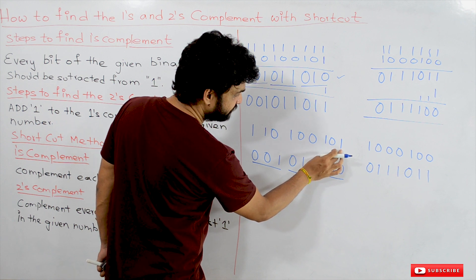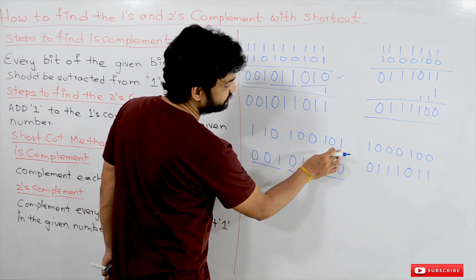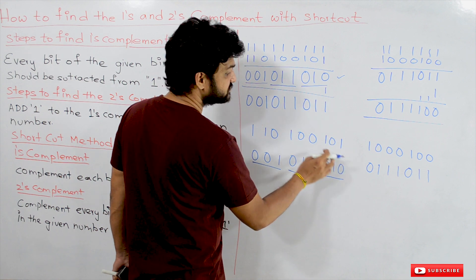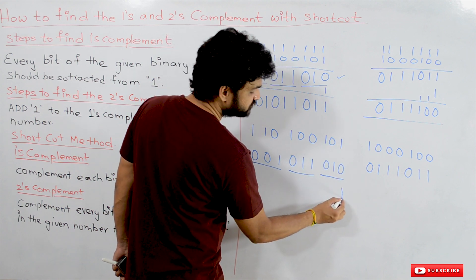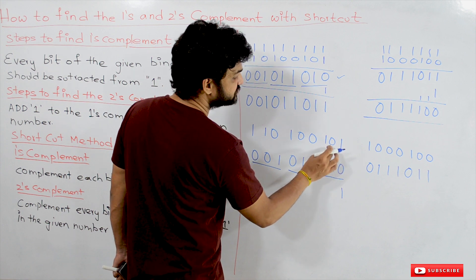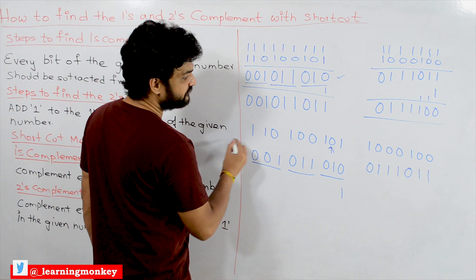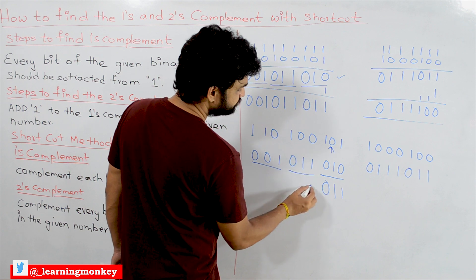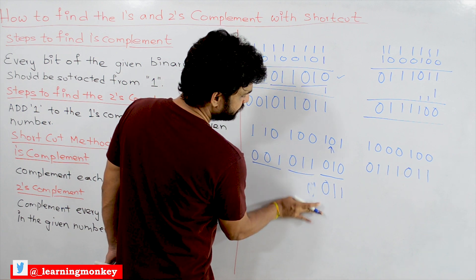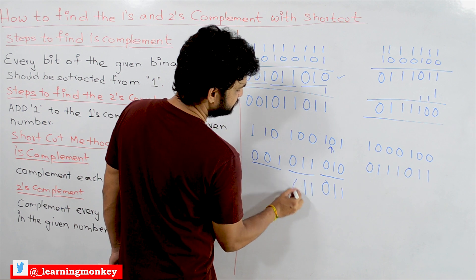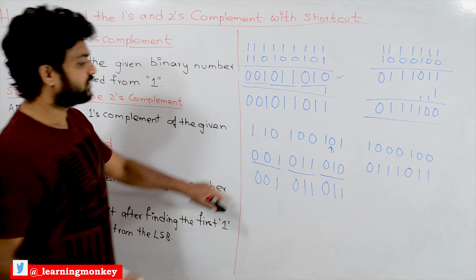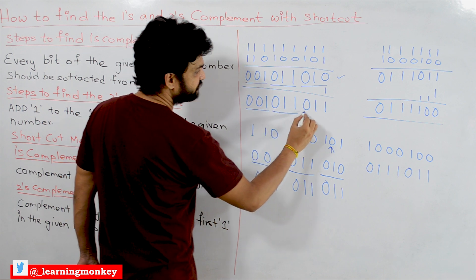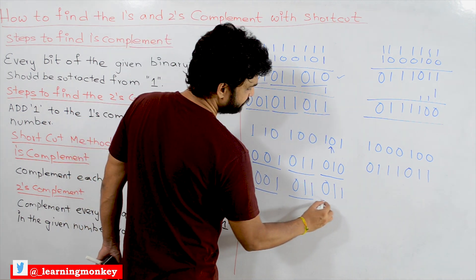Start from the LSB and search for the first one. The first one is identified at the LSB position. Before that, take those bits as they are. After finding the first one, complement every remaining bit. The result is 1 1 0 1 0 0, and the twos complement is confirmed as 0 0 1 0 1 1 0 1 1.